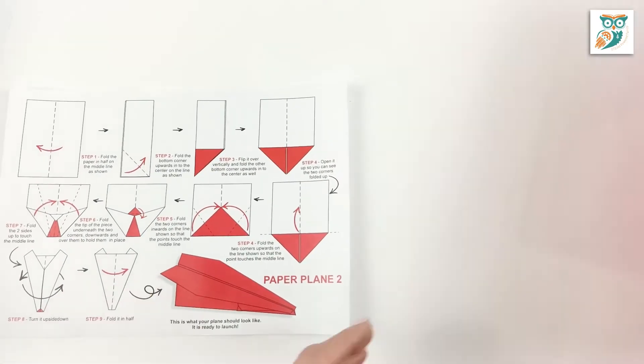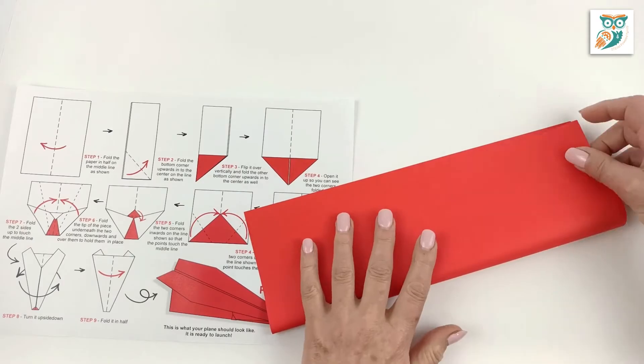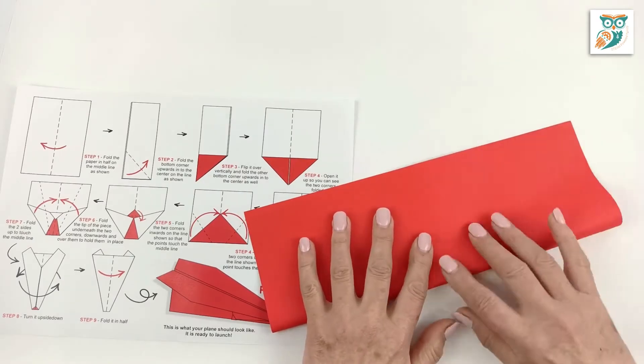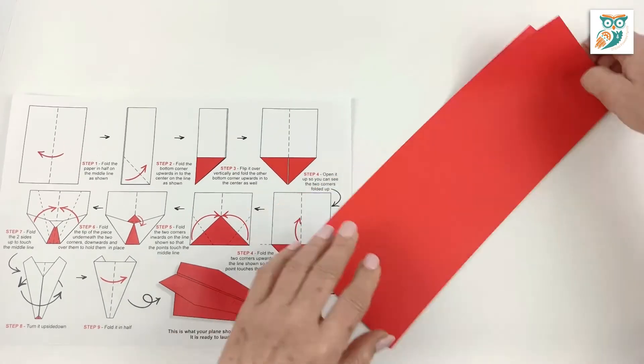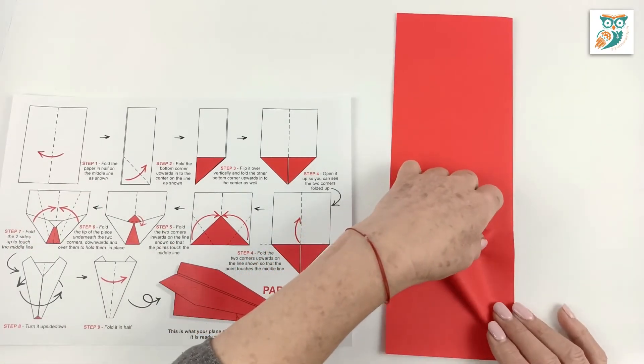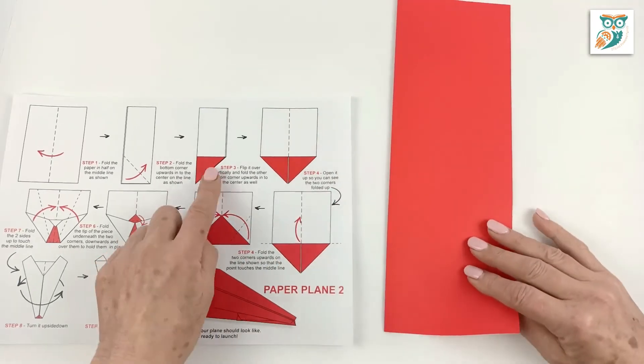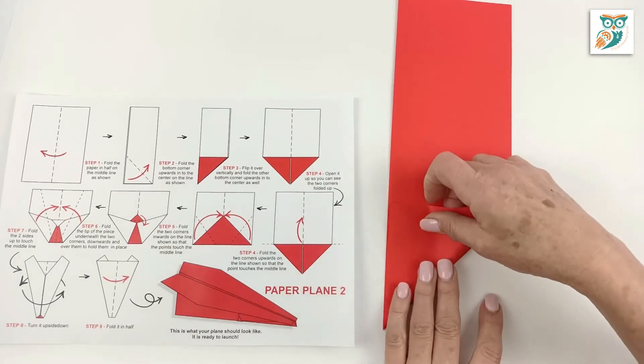Now let's do the second airplane design. Once again we're going to grab a standard sheet of craft paper and we're going to fold it in half. Now grab one side and bring that corner up. This time we're folding out. You'll notice we're keeping the paper folded in half. Now do the other side.